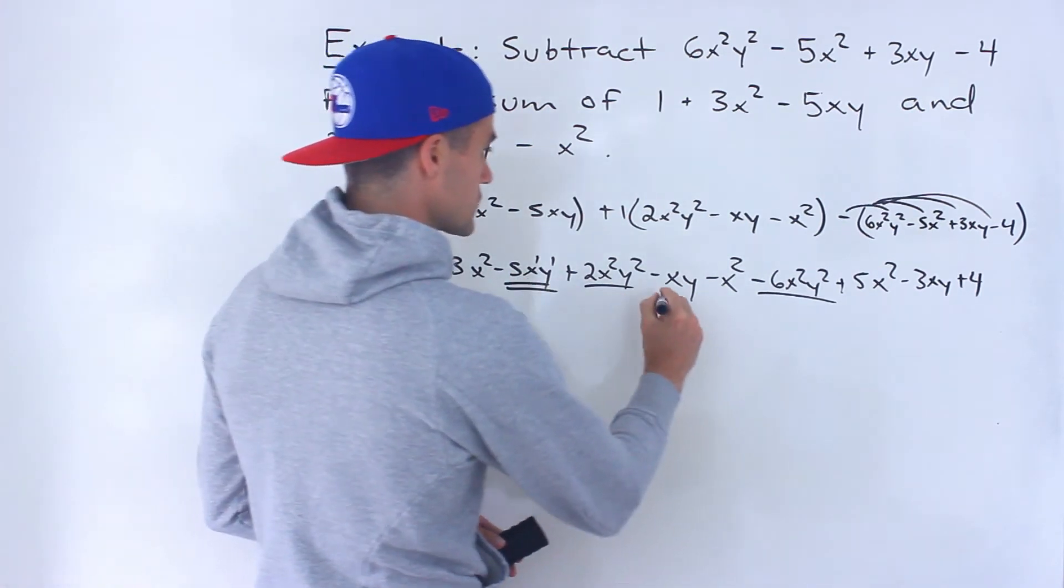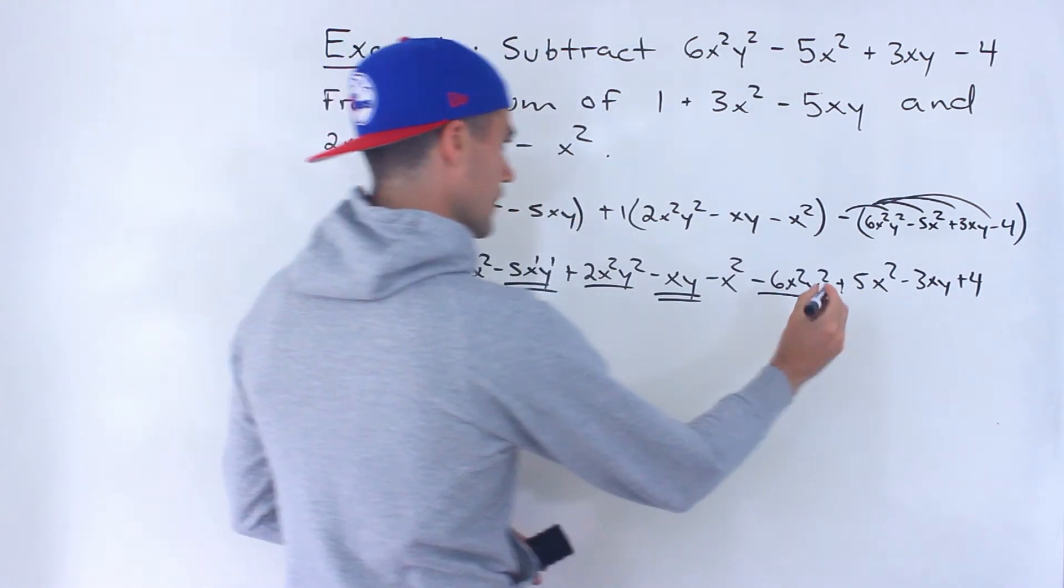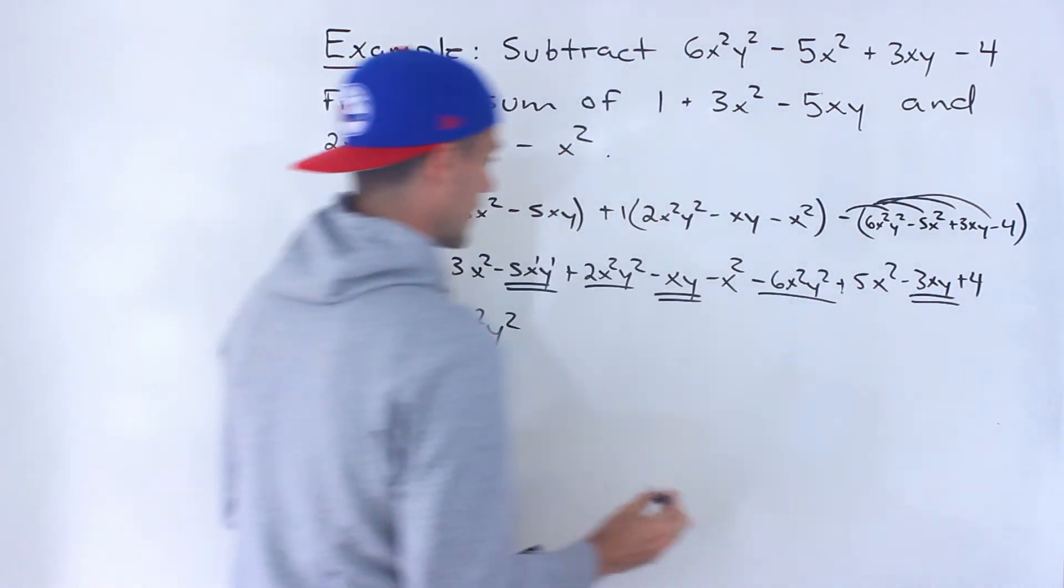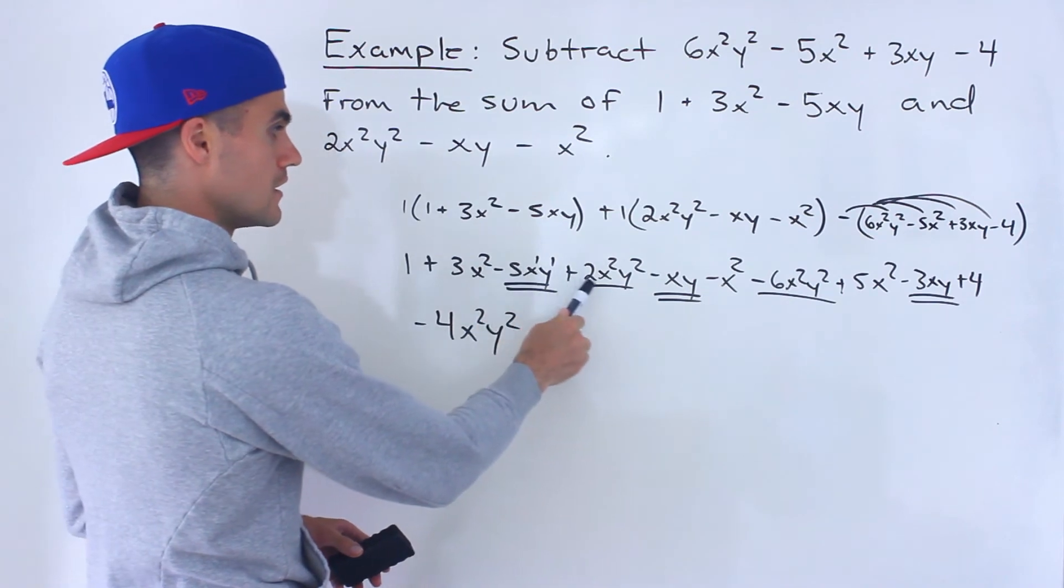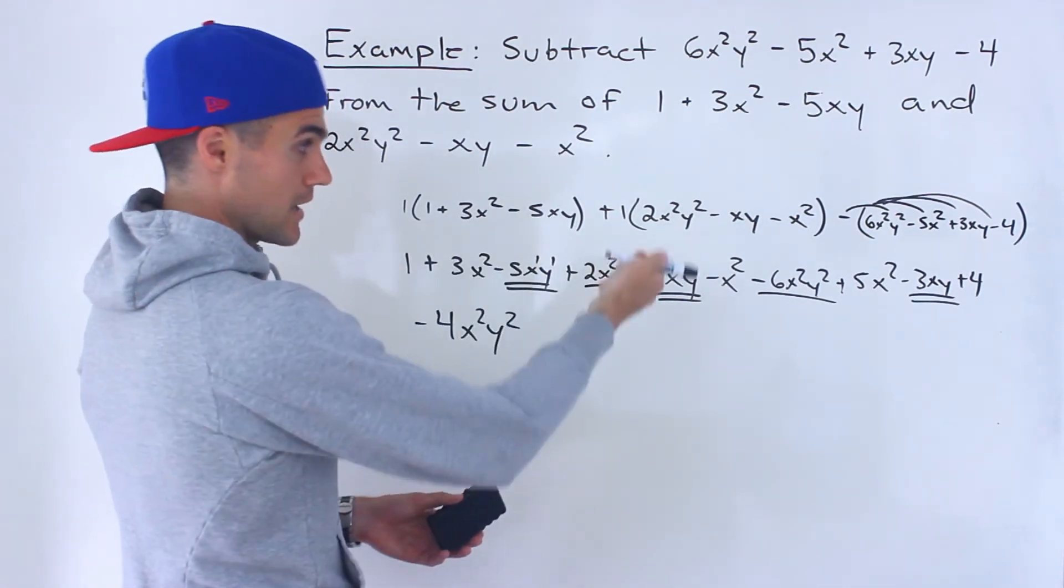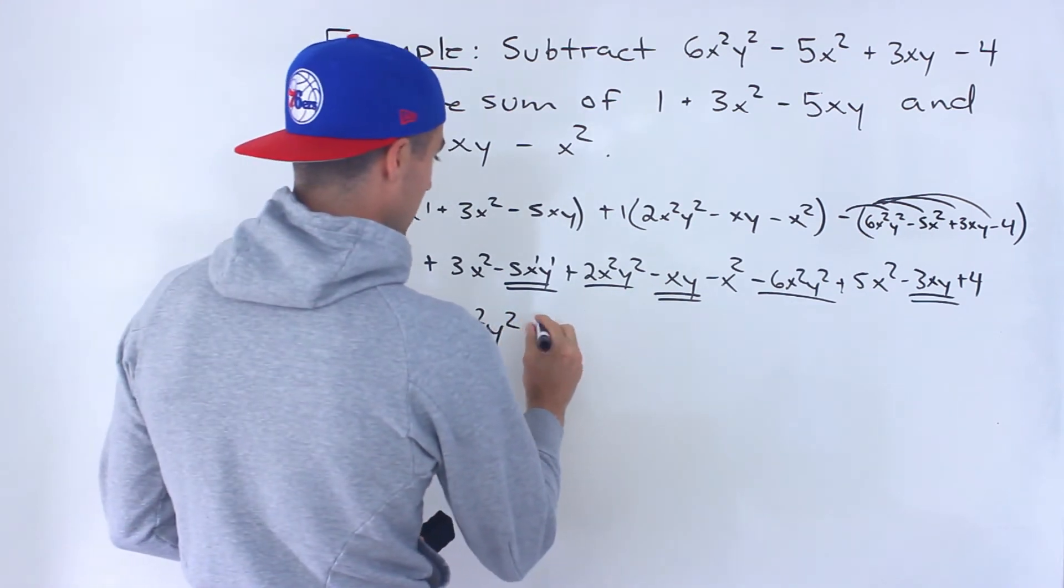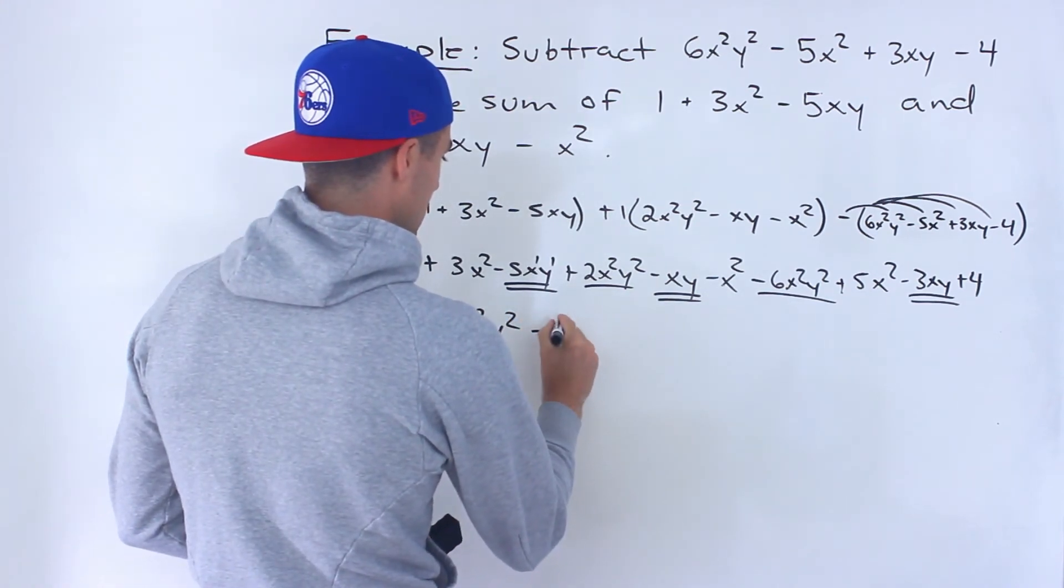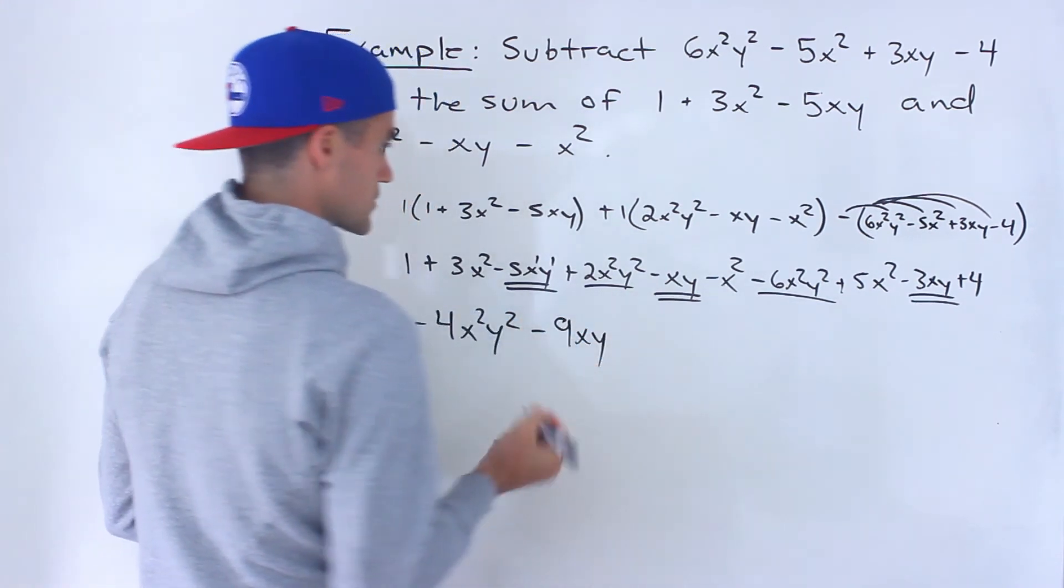So we got -5xy - xy and then -3xy. So -5 - 1 gives us -6 minus 3 gives us -9. So we'll have -9xy like that.